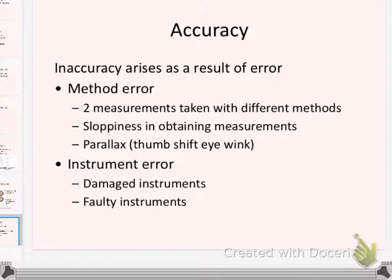If you're just sloppy, you get error. We're going to talk about parallax error. Stick your thumb out and cover up something in the room. Close one eye. Now change eyes. Does your thumb hop? Try doing it on an object closer to you and an object further away.